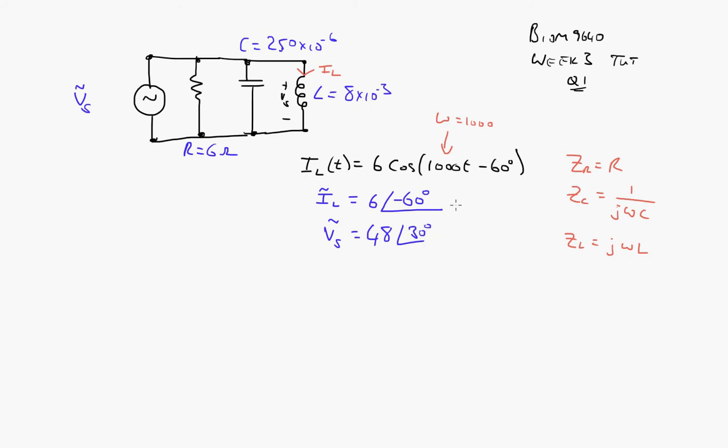There we go. That was IL we were given and VS we calculated. The next question asks us to determine the magnitude and phase angle of the current flowing through the resistor and the capacitor.